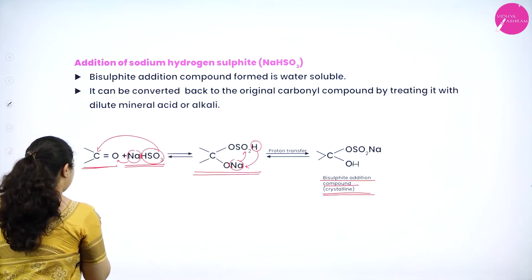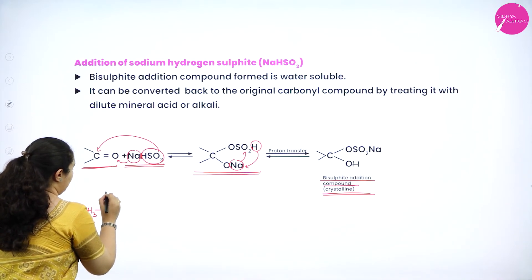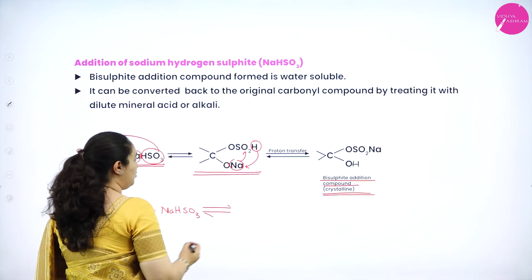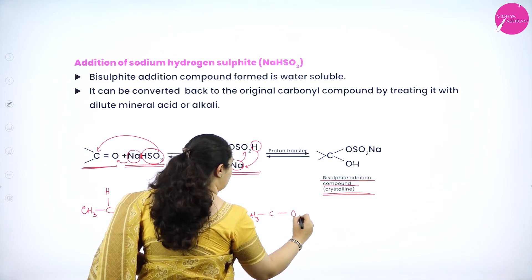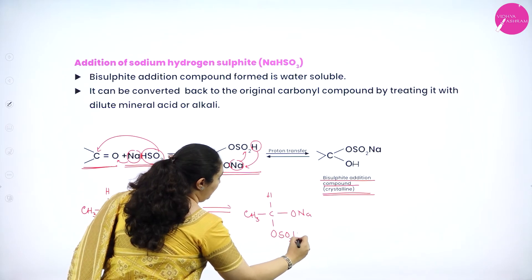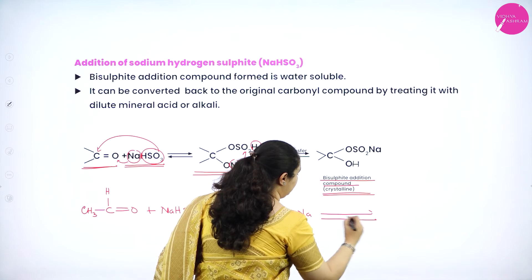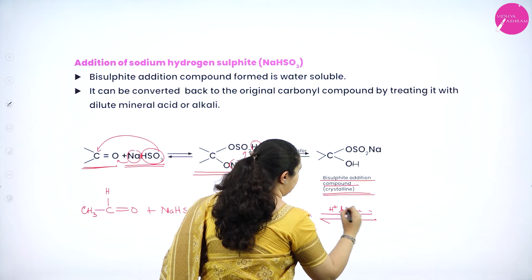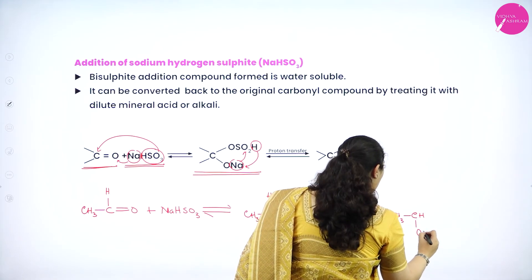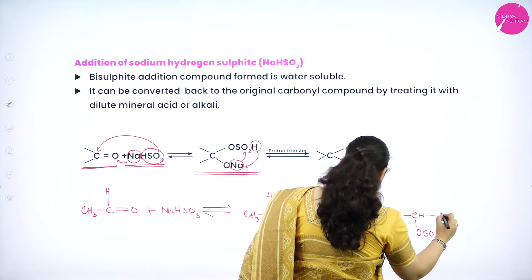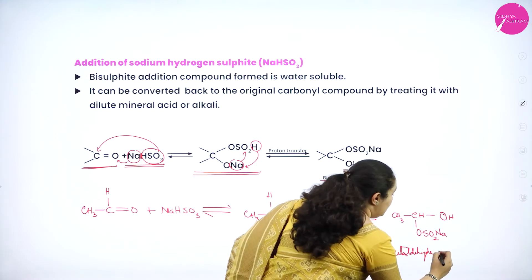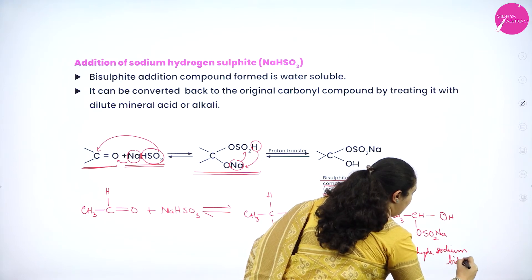For the example with acetaldehyde: CH3CHO plus sodium bisulfite. Sodium goes to oxygen, giving –ONa, and the –OSO2H gets attached to the carbon atom. After proton transfer, you get CH3–CH(OH)–OSO2Na. This is acetaldehyde sodium bisulfite addition compound.